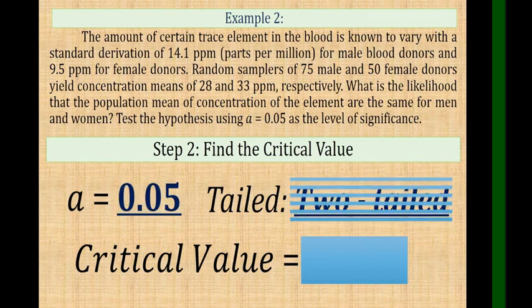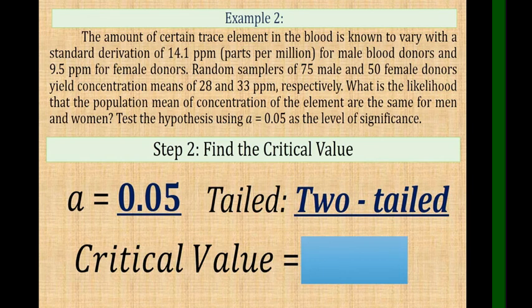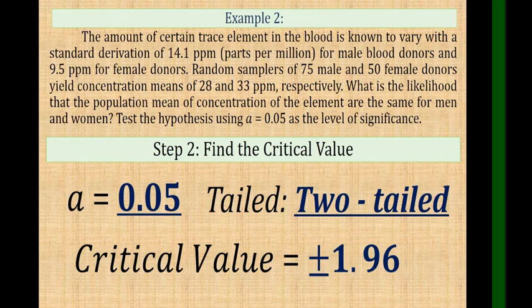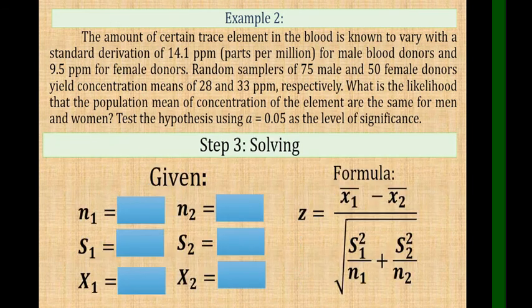For the alpha, we have 0.05. The tail is two-tailed. Going to our critical region, you can see that their intersection is 1.96.